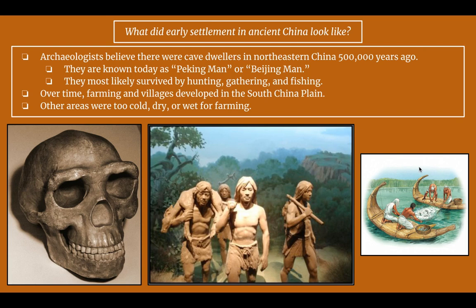Archaeologists believe there were cave dwellers in Northeastern China about 500,000 years ago. They lived in caves and are known as Peking man or Beijing man. They most likely survived with hunting, gathering, and fishing. Over time, farming and villages developed in the North China plain, and the population would have grown as more permanent villages developed. Other areas of China were too cold, dry, or wet for farming, so most of these early settlements would have been in the North China plain. Here's a skull of Beijing man, some hunter-gatherers, and fishermen.